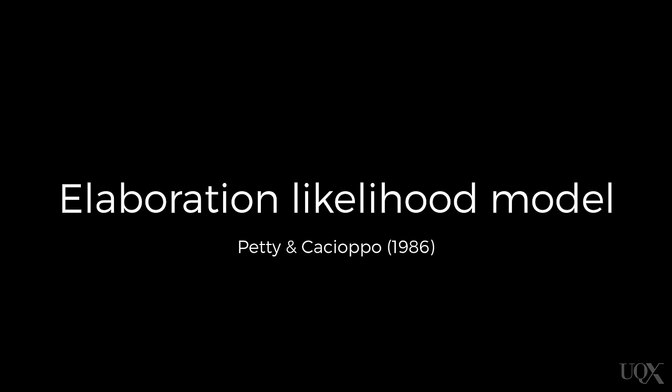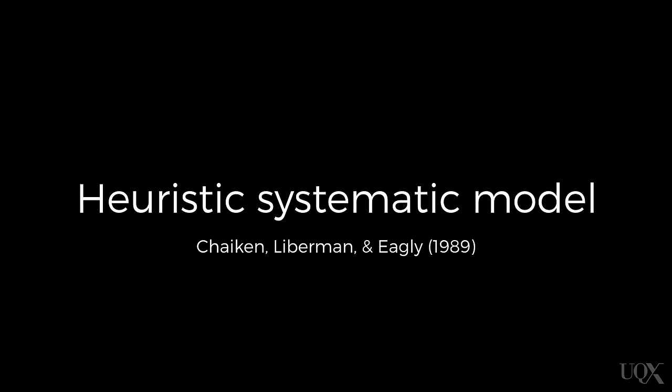Under what circumstances does the content of the message influence our attitudes? To answer this question, we need to consider the process by which attitudes can be changed. There's a set of models in the attitude change literature called the dual process models that describe the way we're influenced by persuasive messages. The two main dual process models are the elaboration likelihood model and the heuristic systematic model. These are dual process models because they describe two ways in which things happen.